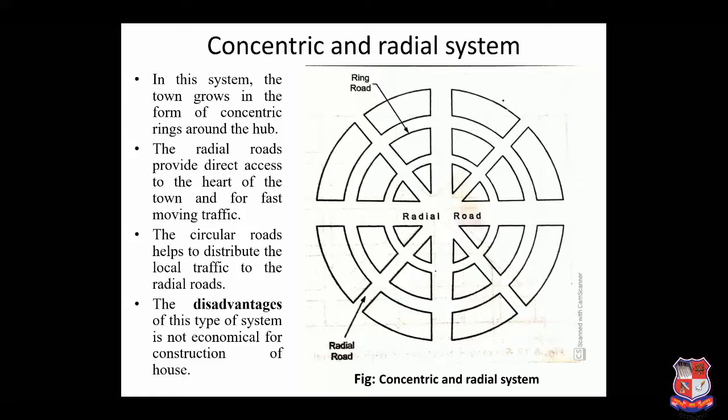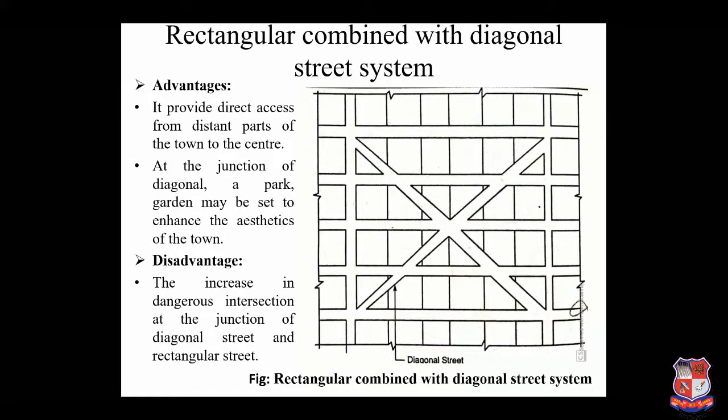The rectangular combined with diagonal street system is a modified form of the rectangular street system. Along with rectangular streets, diagonal streets are also provided, as can be seen in the figure.